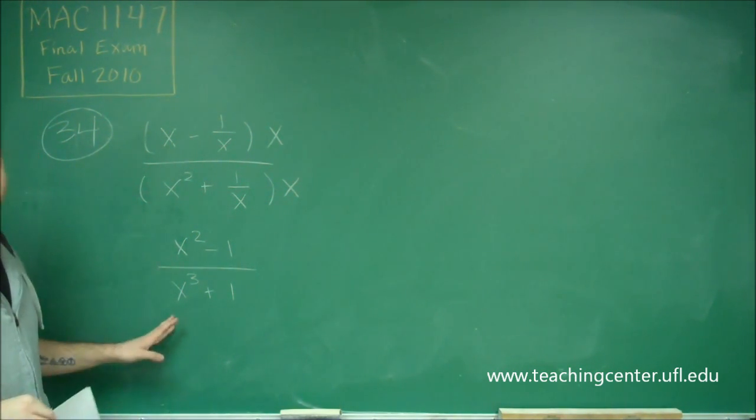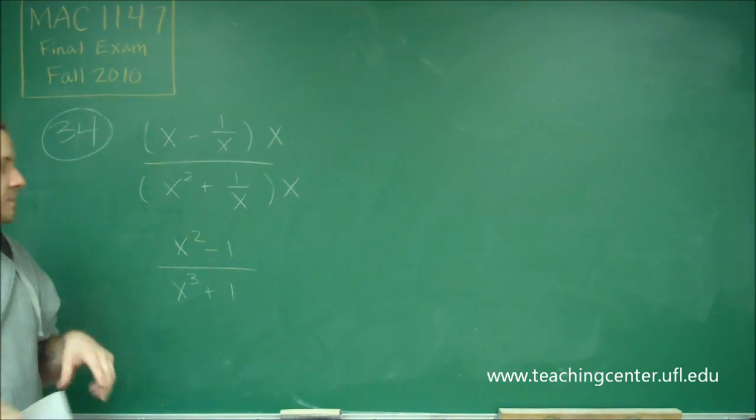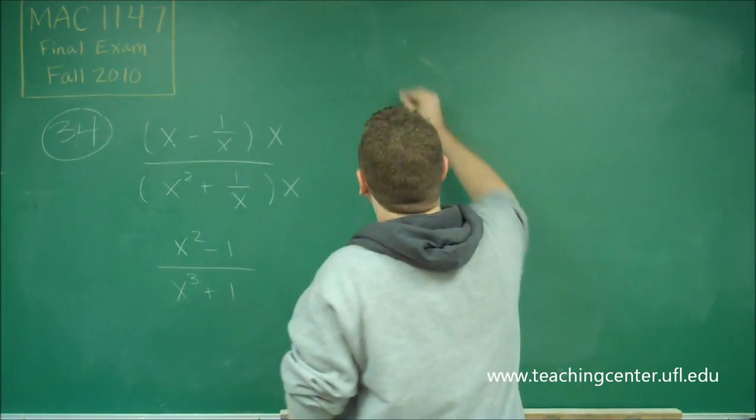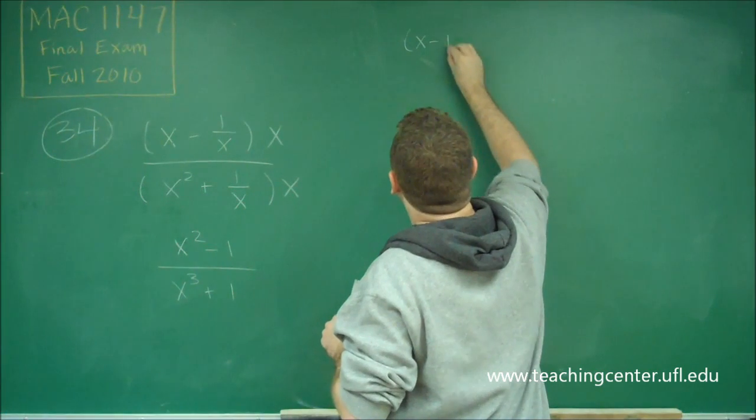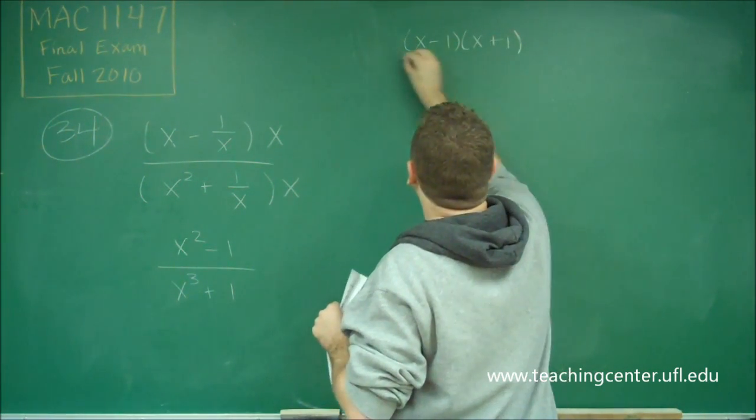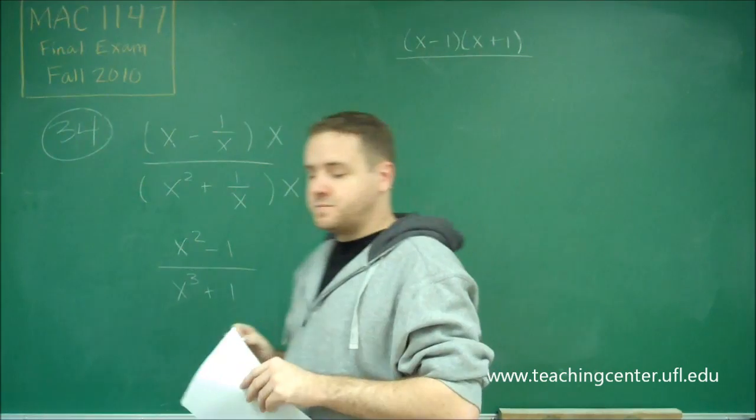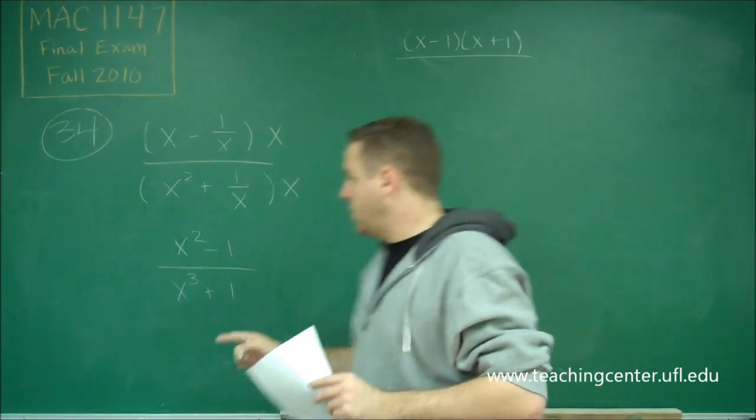x squared minus 1 becomes x minus 1 times x plus 1 when we factor it out—it's the difference of two squares.